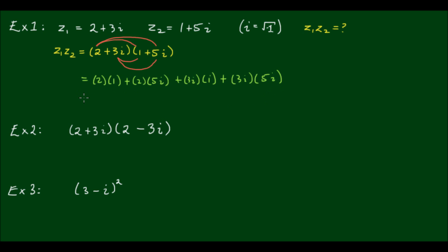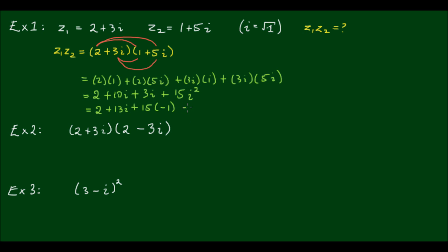To simplify, I get 2 plus 10i plus 3i, and then plus — 3 times 5 is 15, and then i times i is equal to i squared. Simplifying further, I get 2 plus 13i, and then plus 15 times i squared. Now i squared is equal to negative 1, because the square root of negative 1, squared, is equal to negative 1. So this effectively becomes negative 13 plus 13i.